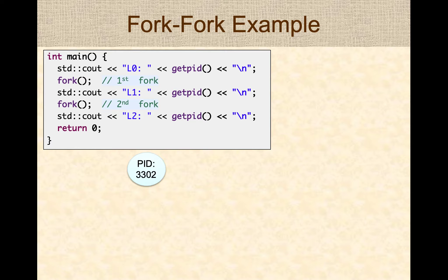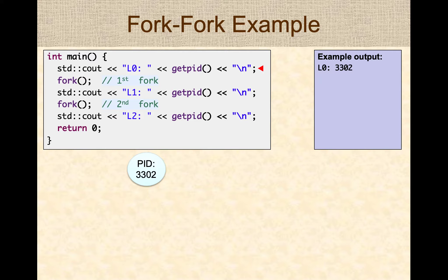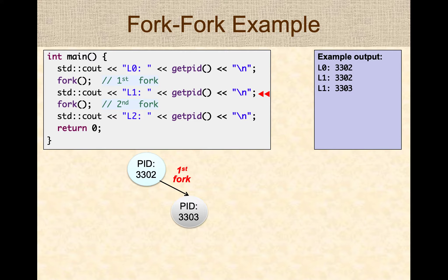Let's look at fork without any if-else logic, just to make sure we understand how the fork system call works and to build a mental model on how multiple processes are created. Starting with the first line, the parent process — say with process ID 3302 — runs the cout statement. Notice that there is only one process running, as indicated by the little red triangle. The parent process prints its process ID, which is 3302 in this example. In the next line of code, we are going to fork. An identical process is created — say its process ID is 3303. Since we do not have an if-else statement, two processes start running and they run the next line of code. Notice there are two red triangles indicating two processes are running, so both processes print output and you will see two lines of output.